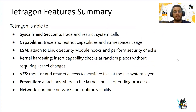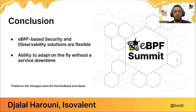In summary, Tetragram can restrict system calls, track or restrict capabilities and namespaces, and it is easy to attach to Linux Security Modules to perform security checks. It can be used to harden the Linux kernel and insert capability checks at arbitrary points without changing kernel code. Our conclusion is that eBPF-based security and observability solutions are flexible and allow us to adapt policies and behavior on the fly without service downtime. Thank you very much.